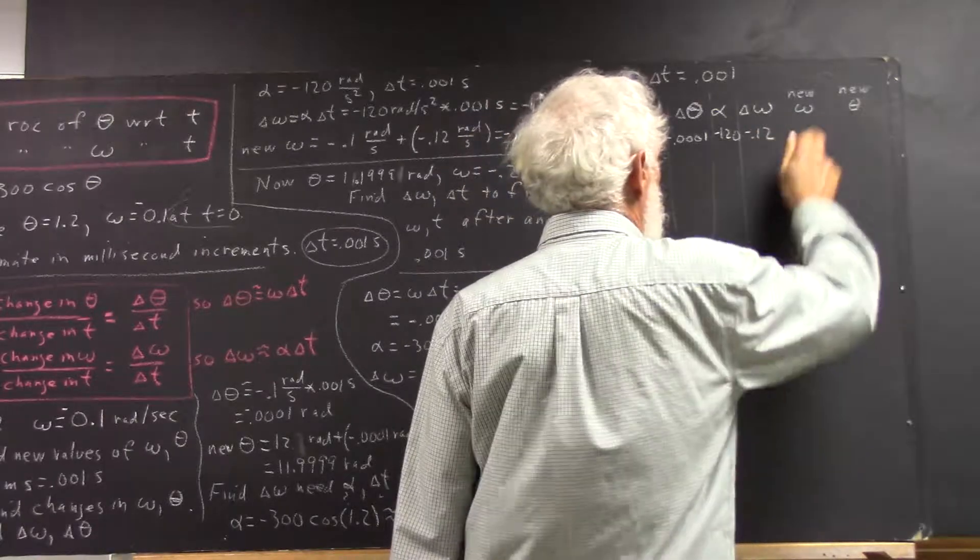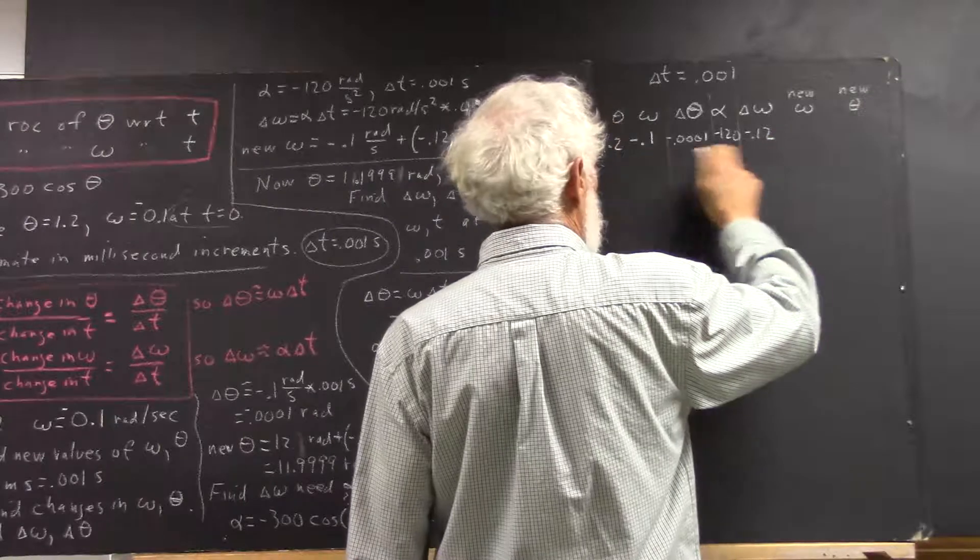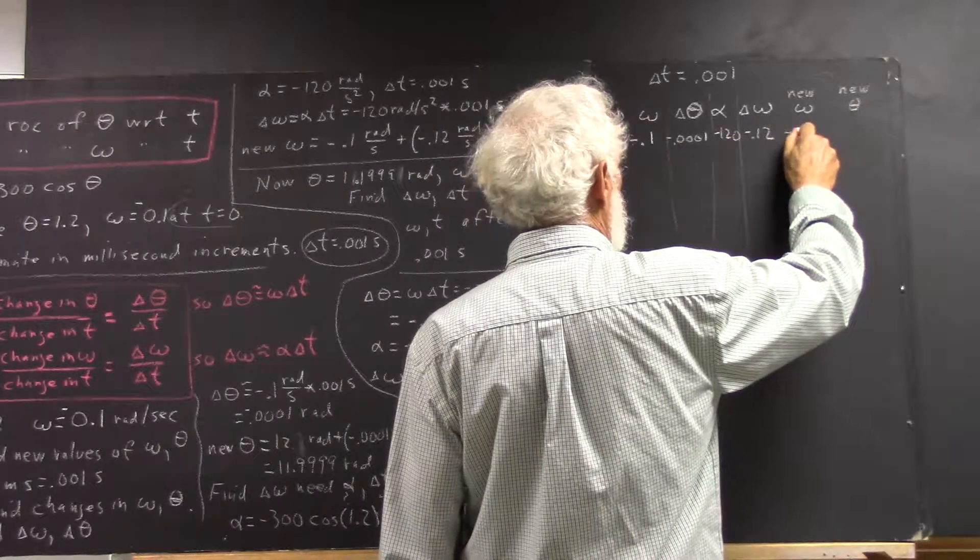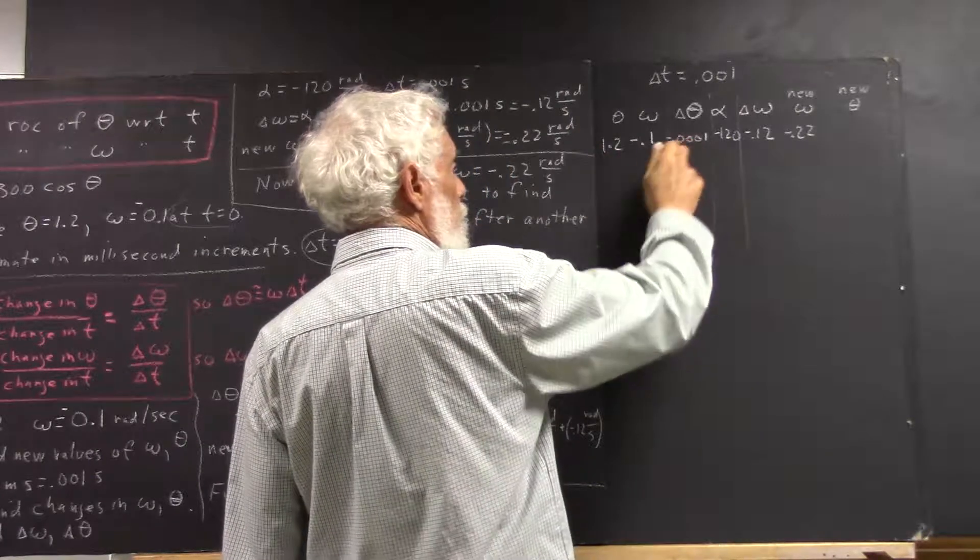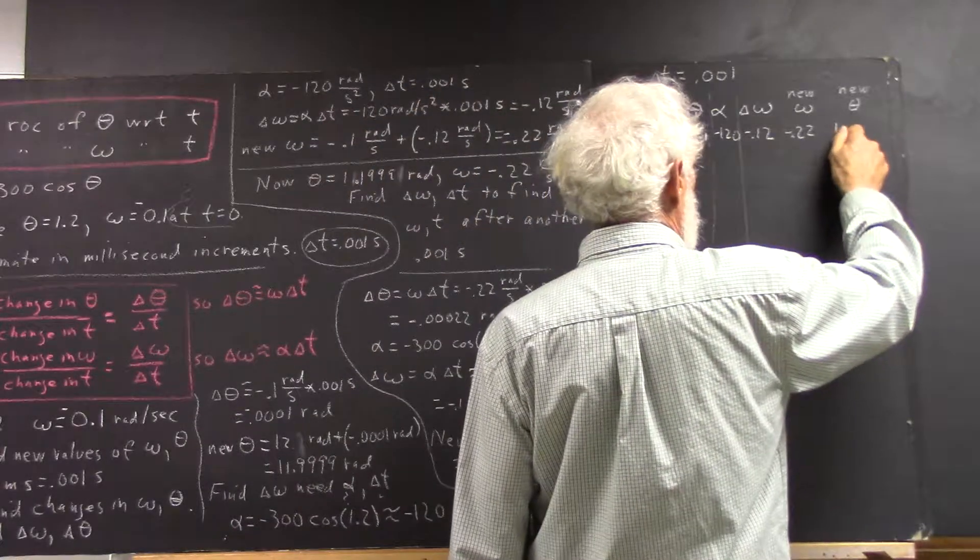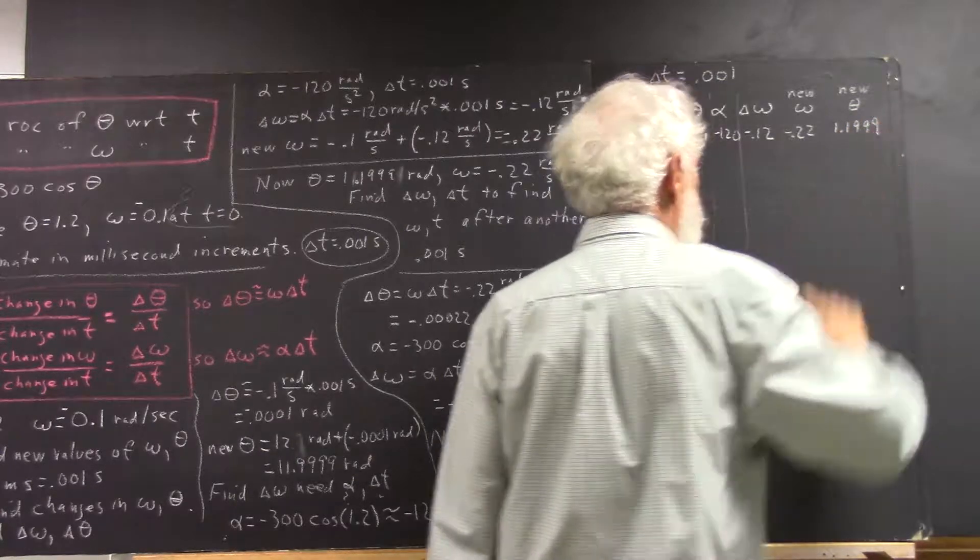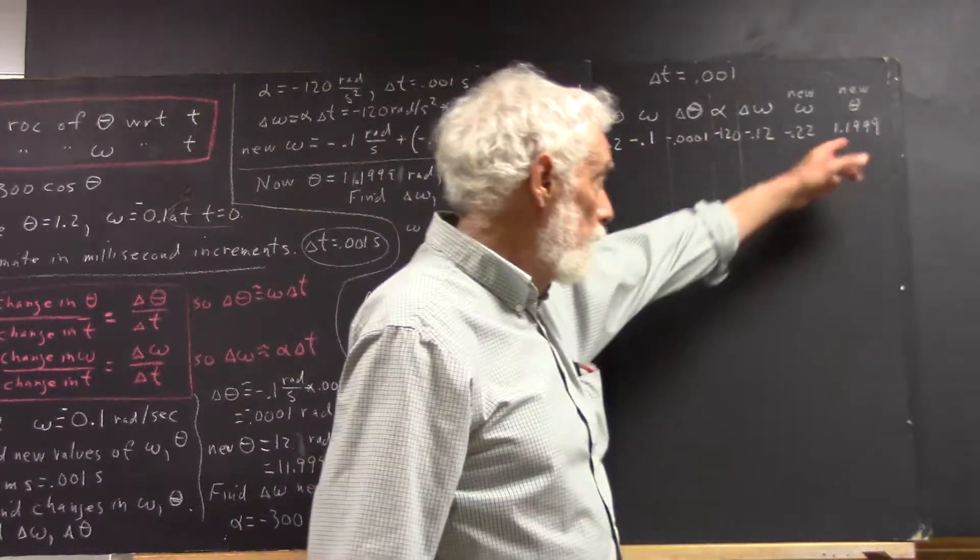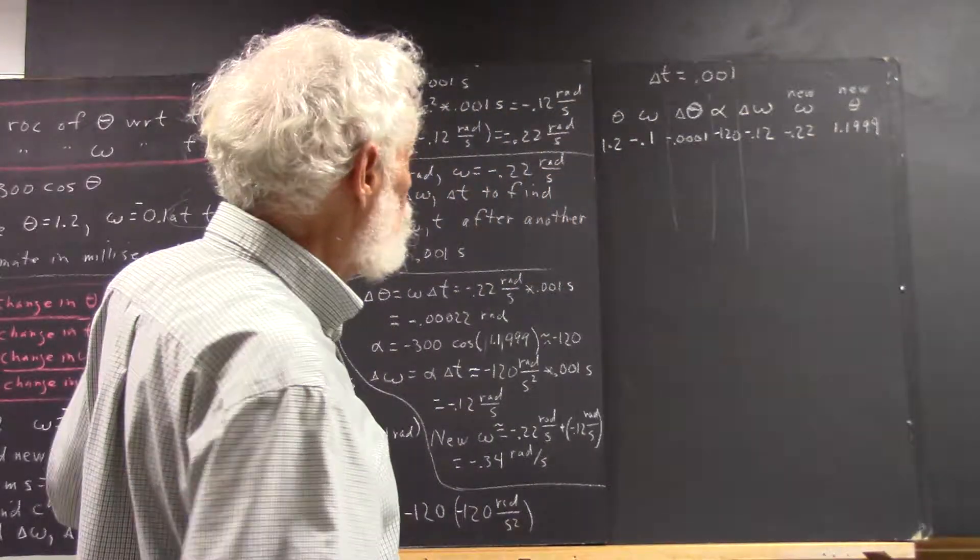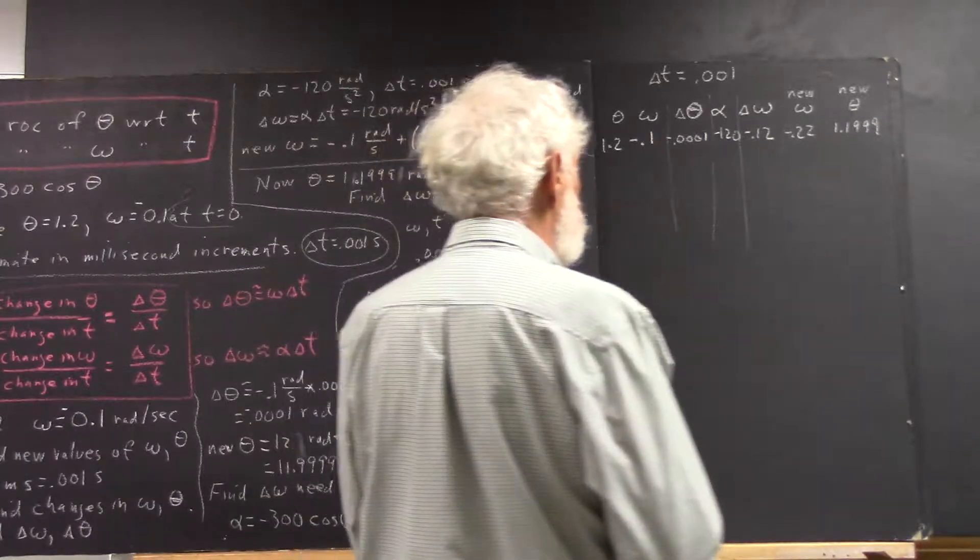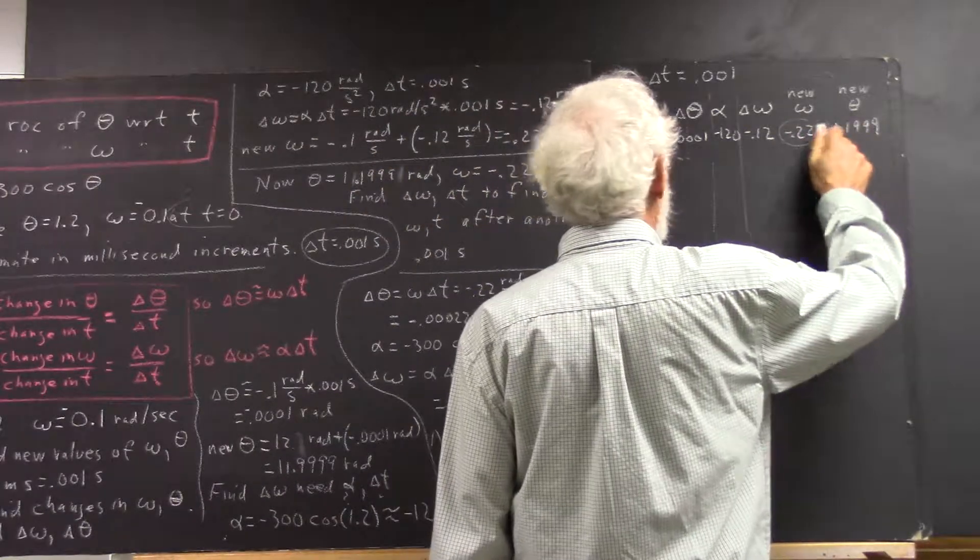Our new omega - we took our omega, we added our change in omega, and we got negative 0.22. Our theta - take our theta and add our new theta and we get 1.19999. Then we bring these two values over.